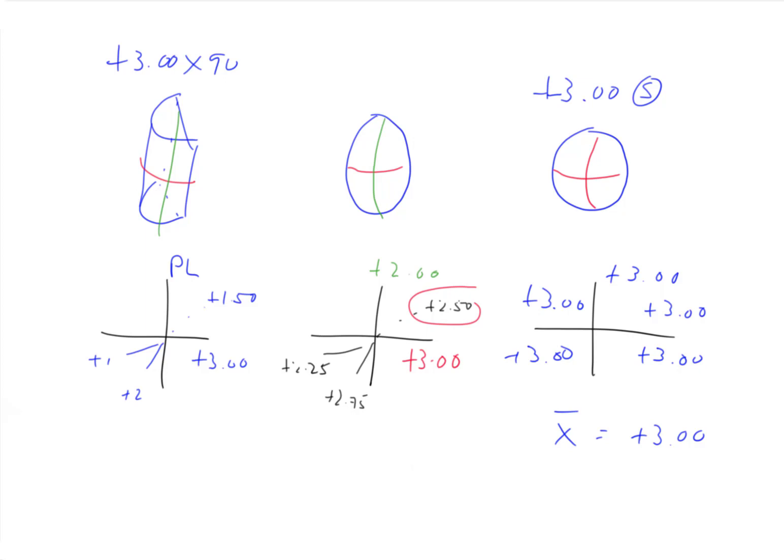So plus two is at 90, plus three is at 180, plus 2.50 would be halfway between 45 and 135. Because it would also be here.